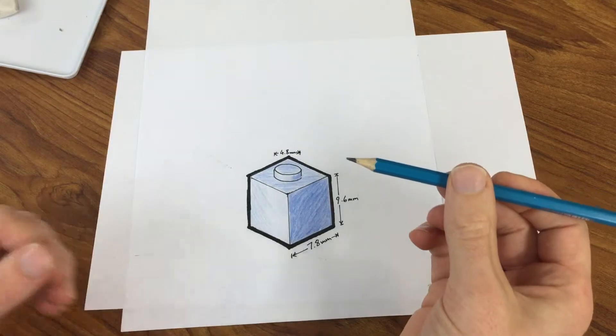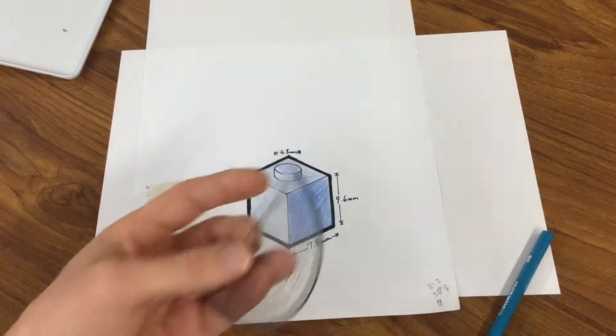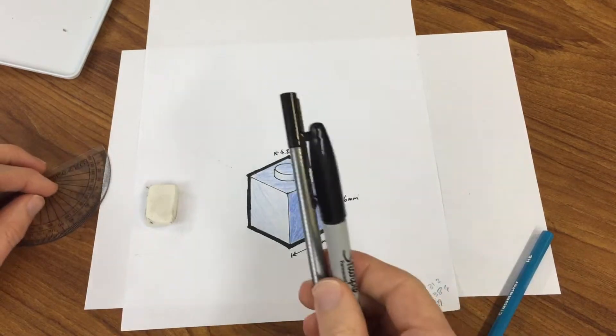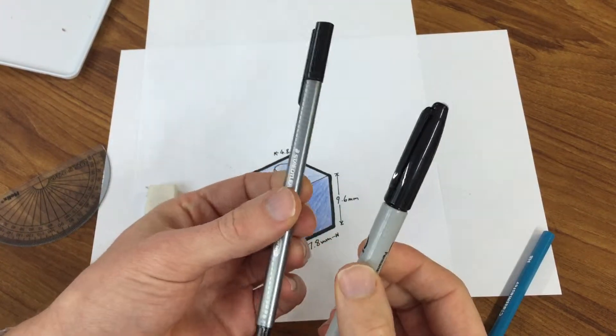To do this you're going to need a sharp pencil, rubber, ruler, protractor, and also a handwriting pen and maybe a sharpie - pens of different thickness.